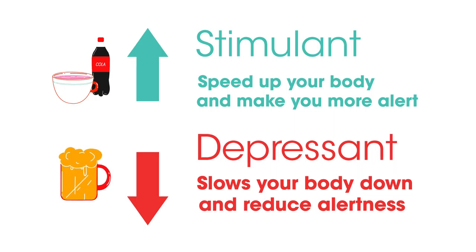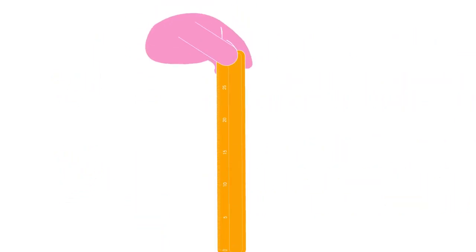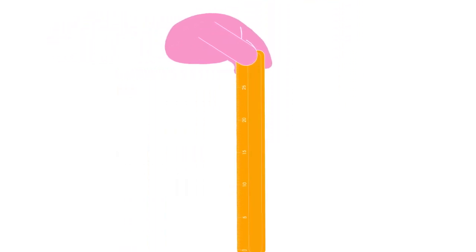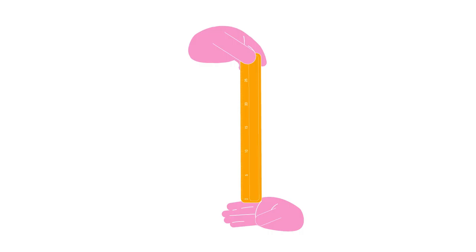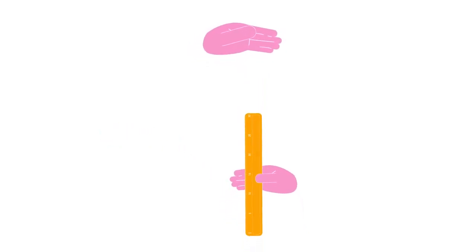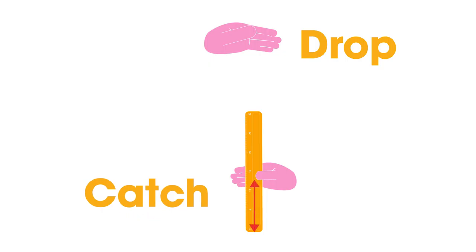One simple way to measure how either drug use or distraction in the environment might alter your reaction time is to do the drop ruler experiment. One person drops a ruler between the subject's thumb and forefinger, which is placed at the 0 cm mark. No warning is given. The distance the ruler has dropped before being caught is read off the scale.